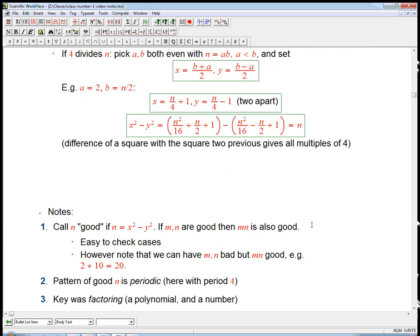The other case isn't much different. If 4 divides n, then you pick A and B both to be even, to a factorization of n where both are even. So you share at least two of the twos that divide n. There might be more.